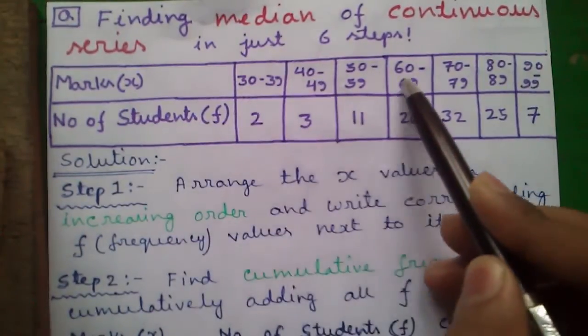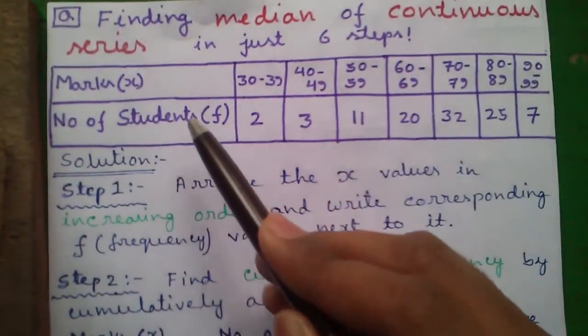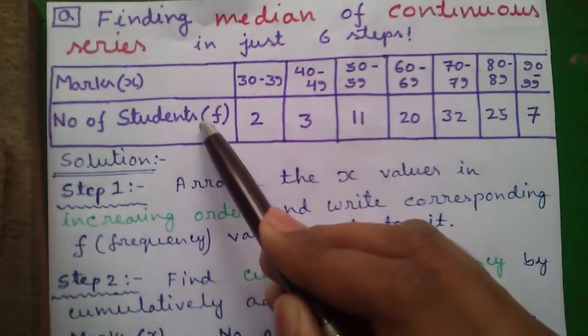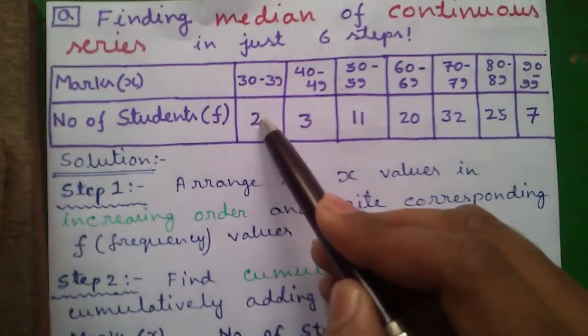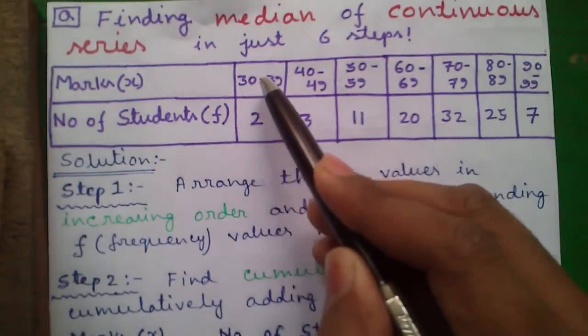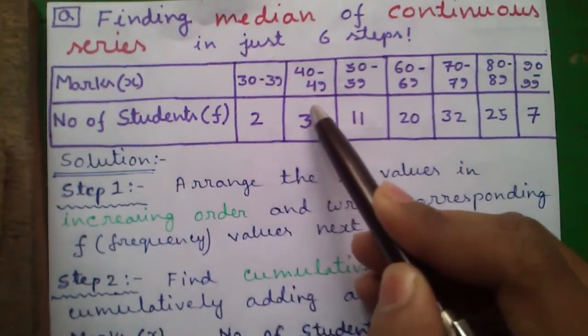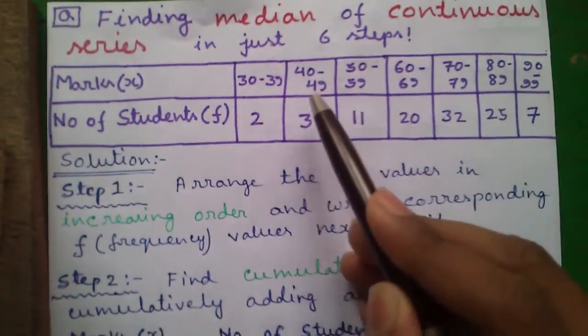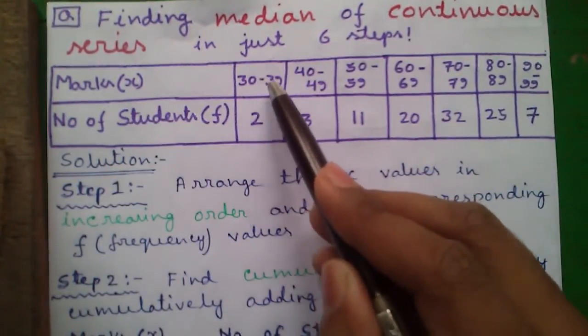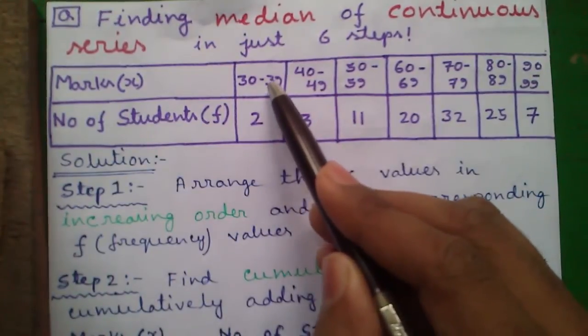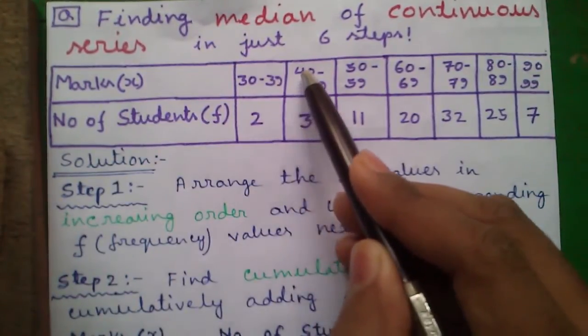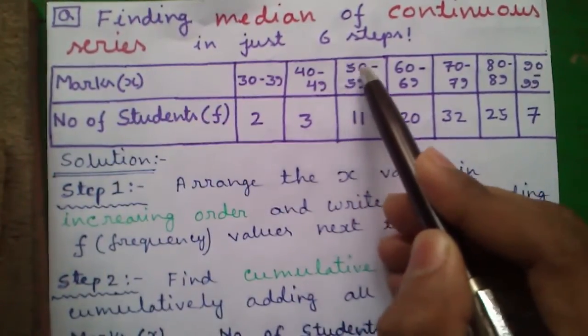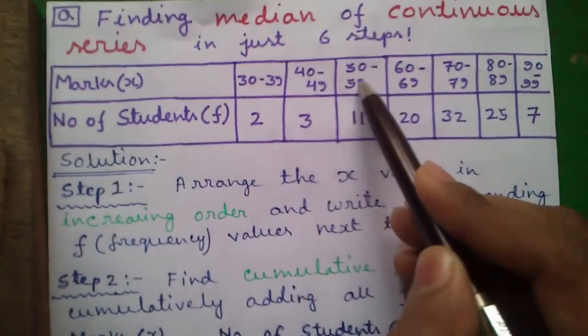Here marks of some students are given denoted by x and number of students has got the same marks are given denoted by f. That means 2 students have got marks between 30 to 39, 3 students have got marks between 40 to 49 and so on. It's called a continuous series because the first number of series is ending in 39 and second number starting from 40, and second number is ending in 49 so third number is starting from 50, and so on.